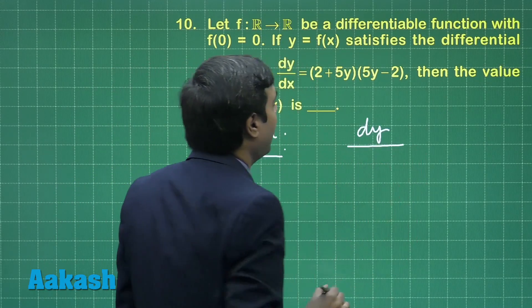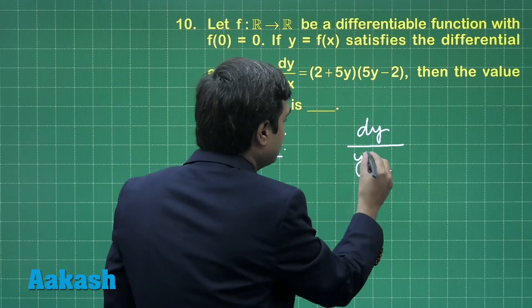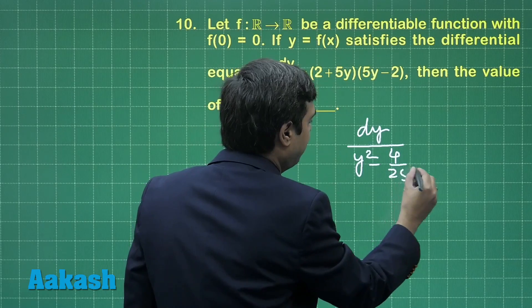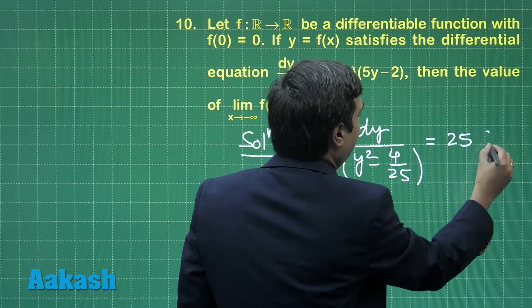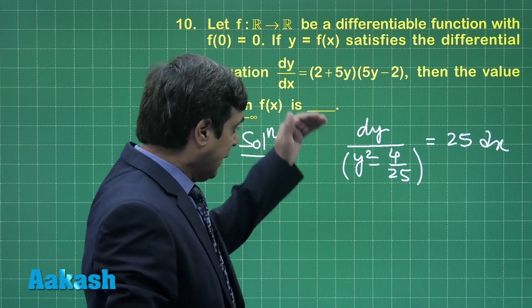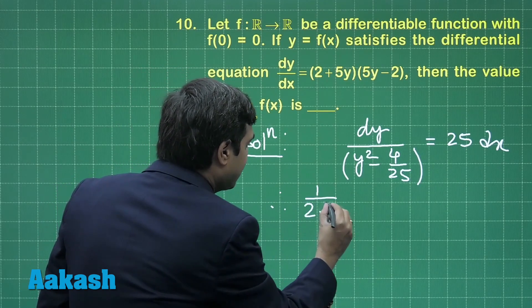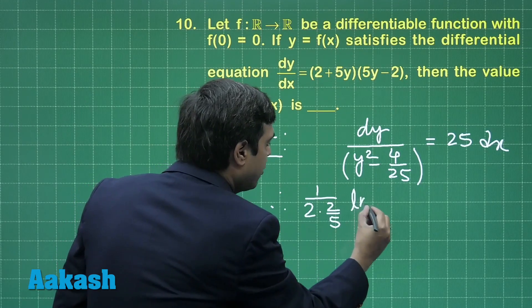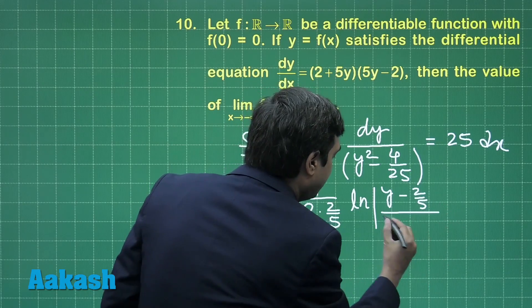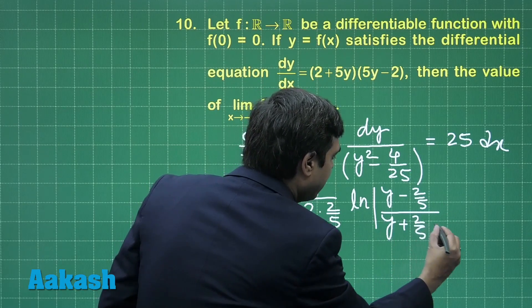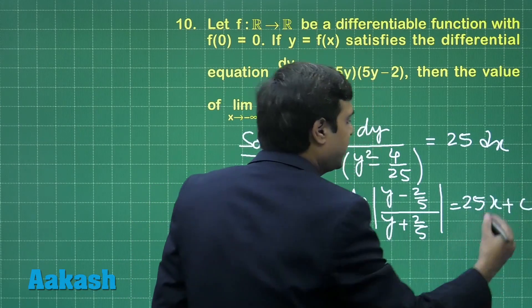A simple question from differential equation. We have dy divided by (y squared minus 4/25) after taking 25 common is equal to 25 dx.